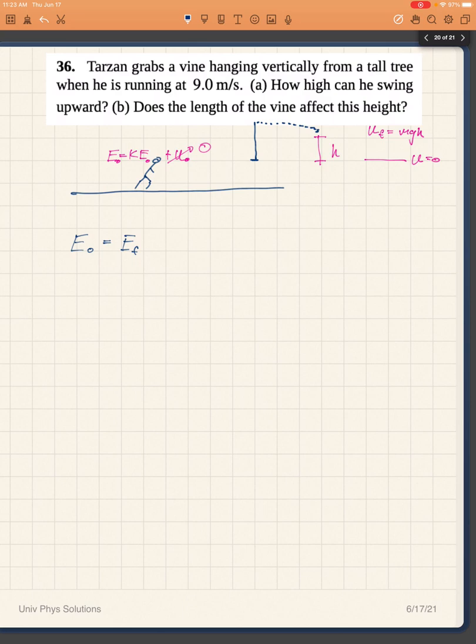The initial kinetic energy is where all the energy is at the beginning, so it's going to be one half m v zero squared. And that has to equal Tarzan's final speed. Now at the top of the trajectory he is no longer moving in the x or y direction, so at the top of the swing we expect his speed to be zero.